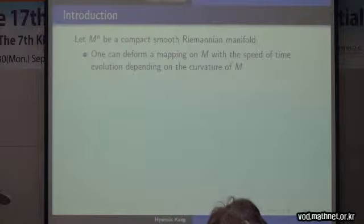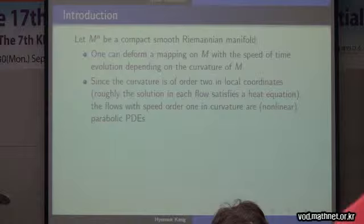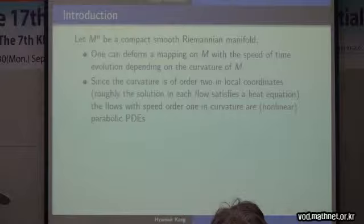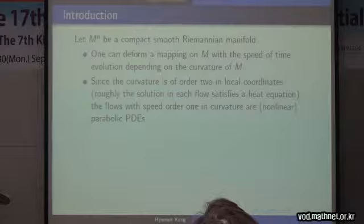In this talk I'm going to discuss extrinsic curvature flow. Roughly speaking, curvature is order 2 in local coordinates. Ricci flow is roughly speaking a heat equation for a metric, and mean curvature flow is a heat equation for the position vector. So roughly speaking it satisfies the heat equation with lower order terms — reaction terms and diffusion terms — which you have to control in order to get good estimates for the curvature. That's what people do when they study these geometric flows.